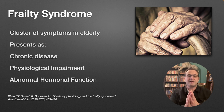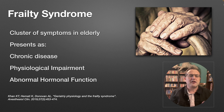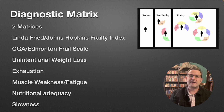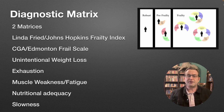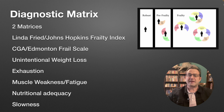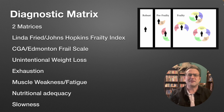Frailty syndrome is a cluster of symptoms in the elderly that present as chronic disease, physiological impairment, and abnormal hormonal function. It's diagnosed by two common diagnostic matrices: the Linda Fried Johns Hopkins Frailty Index and the CGA Edmonton Frail Scale. Both measure the same domains: unintentional weight loss, exhaustion, muscle weakness, fatigue, nutritional adequacy or inadequacy, and slowness. Slowness is interesting — if you've ever seen someone do the 'get up and go test' in a hospital, that's someone sitting in a chair, standing up, walking 30 feet, turning around, walking back, and sitting down again.